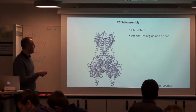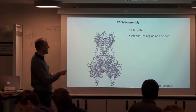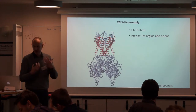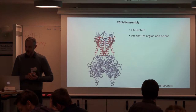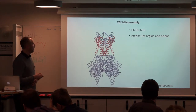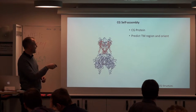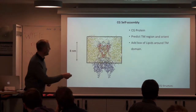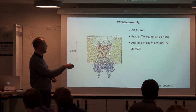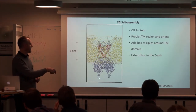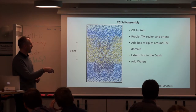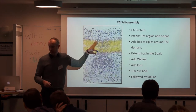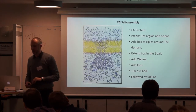Here is the methodology. We take a membrane protein identified from the PDB, and we have a rough idea of the membrane-spanning regions by taking the sequence and running it through something like Octopus. We can then bias the orientation of the protein to make sure the bilayer forms. We put a random box of lipids around the transmembrane region, extend the box in the Z-axis, add waters and ions, and run the MD simulation. Spontaneously, the bilayer forms around the protein structure.